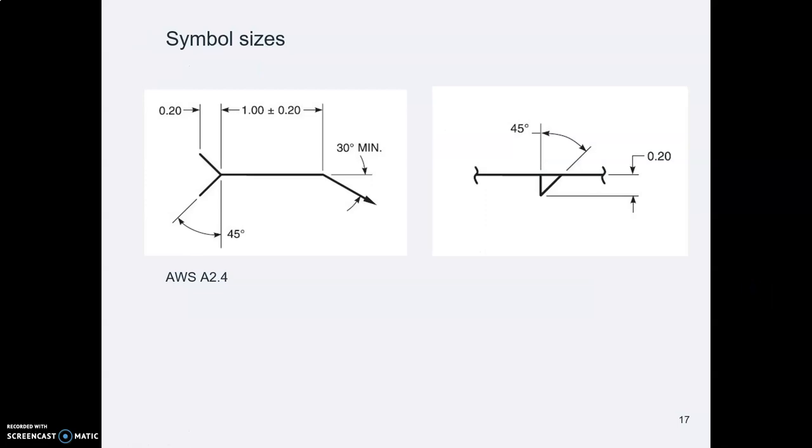Here are the sizes from AWS. I gave you these in a handout. The triangle, the fillet weld symbol, is 0.2 high when printed and the tail is 0.2 wide when printed. Both of these use 45-degree angles. I'm sorry they use leading zeros. This is not an ASME standard, obviously.